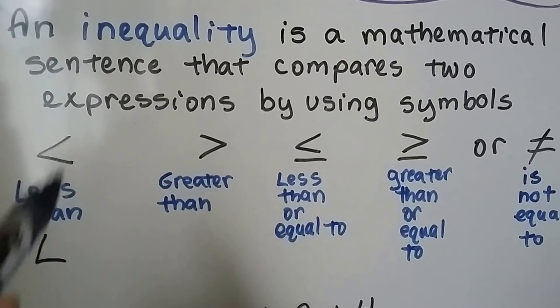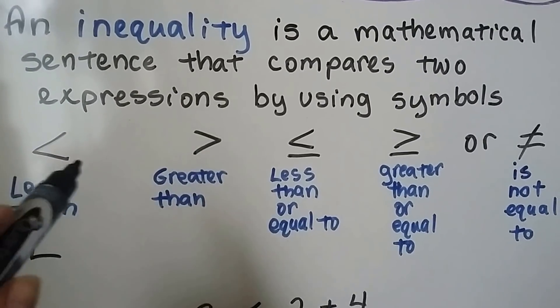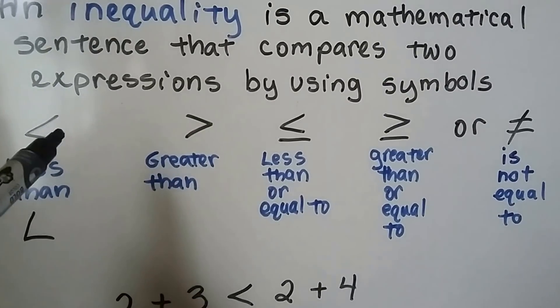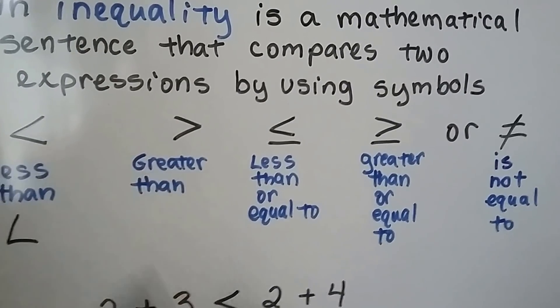We can remember the less than because it's almost in the shape of an L. It goes in the same direction as an L. We can also remember that the small tip goes to the small number and the big open mouth side goes to the larger number.